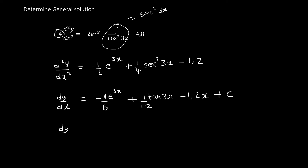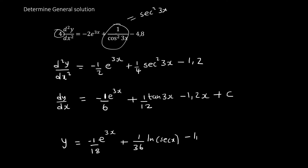Now we integrate the first derivative to get y. Integrating e to the 3x gives e to the 3x over 3, and that over 6 makes it over 18. Integrating tan gives ln(sec), divided by 3 makes 1 over 36. The integral of 1.2x is 1.2 times x squared over 2. The integral of c is cx plus d. That is your final answer — make sure you practice using the formula sheet correctly.